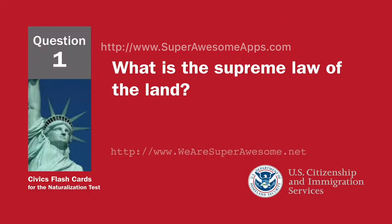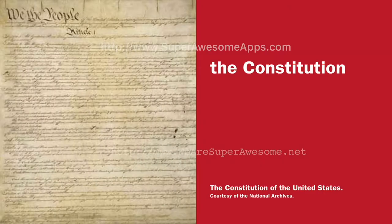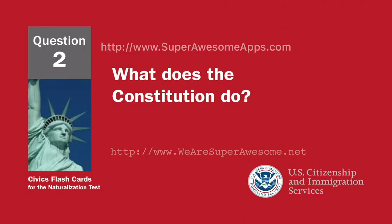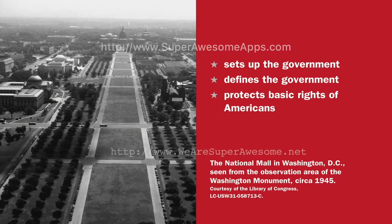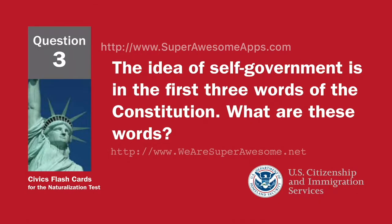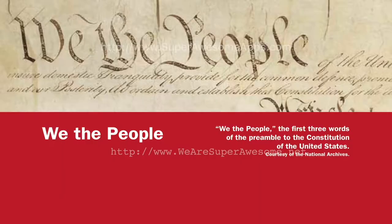What is the supreme law of the land? The Constitution. What does the Constitution do? Sets up the government. Defines the government. Protects basic rights of Americans. The idea of self-government is in the first three words of the Constitution. What are these words? We the people.